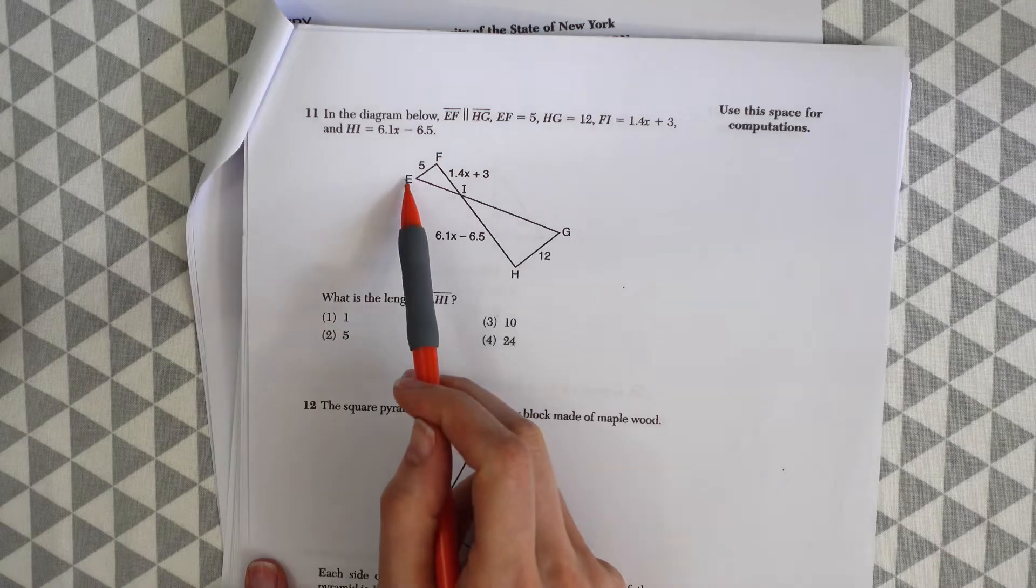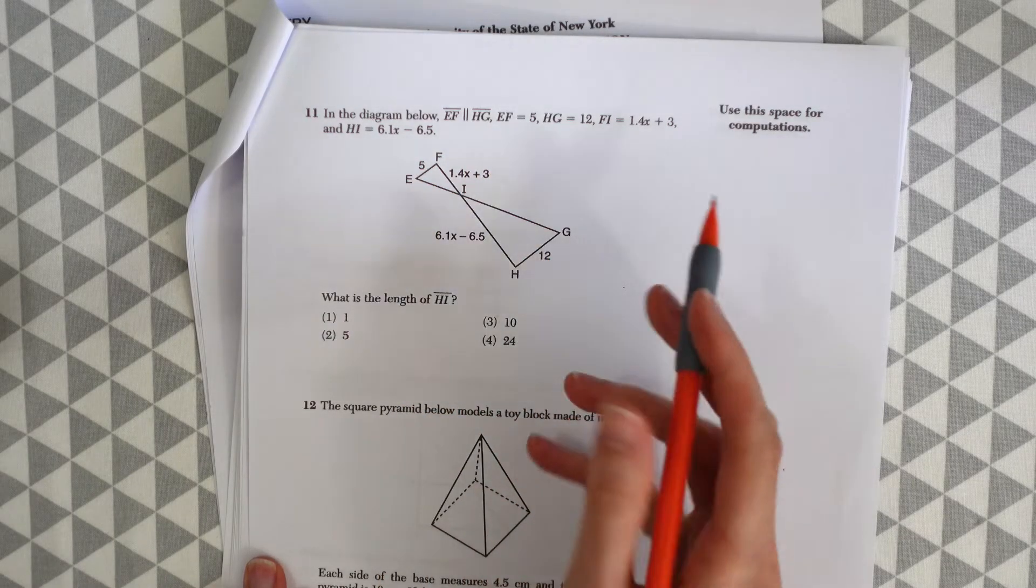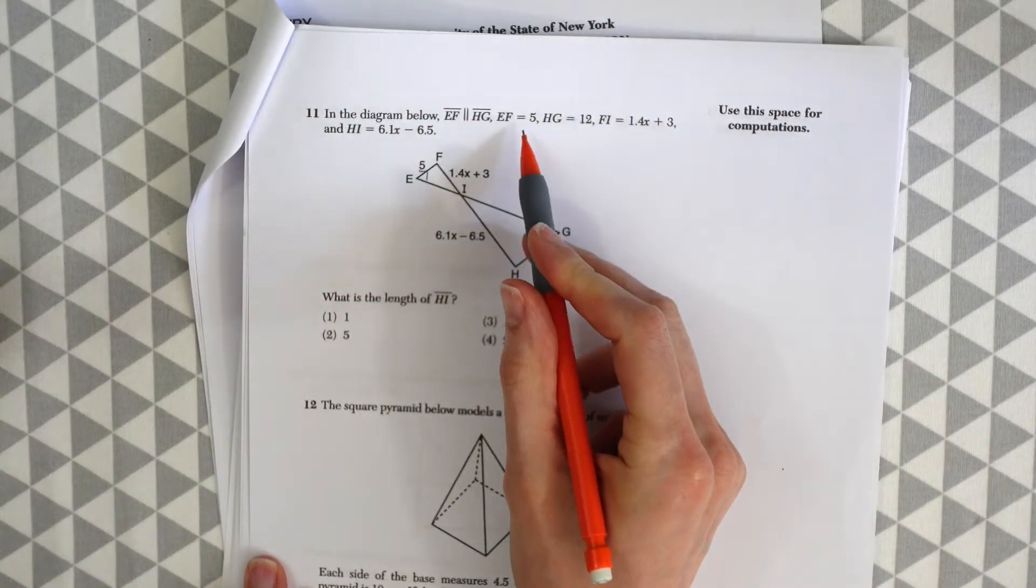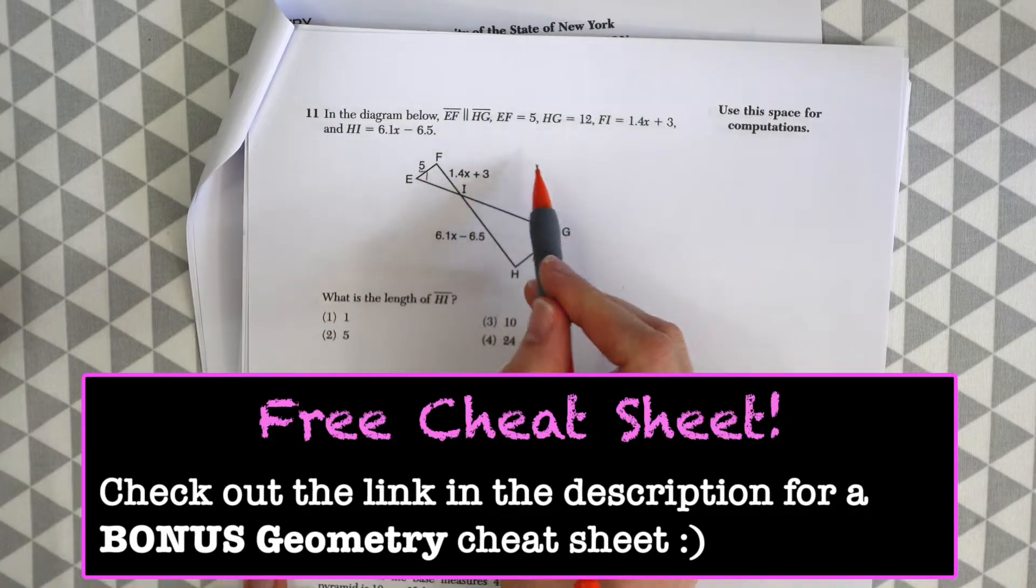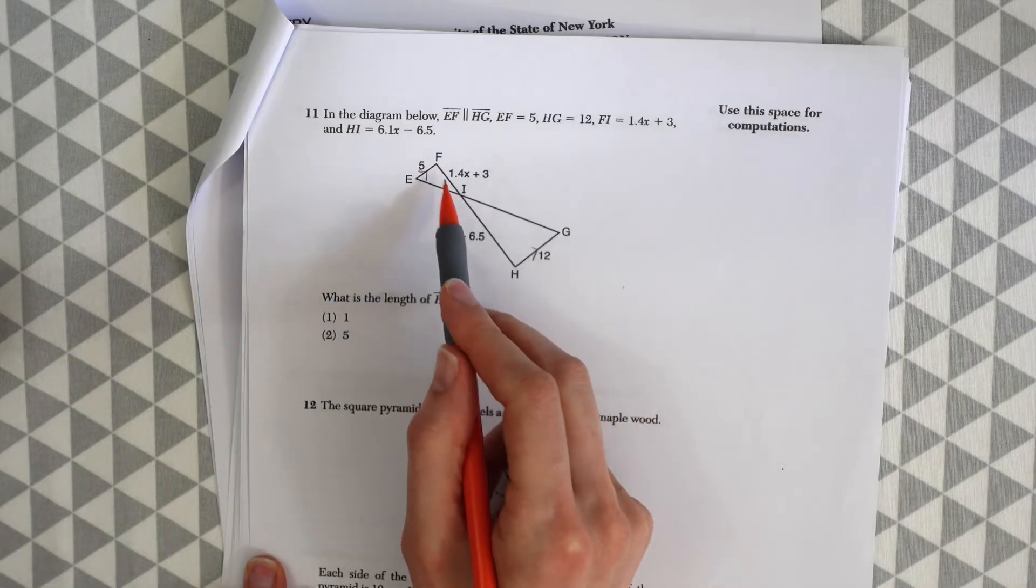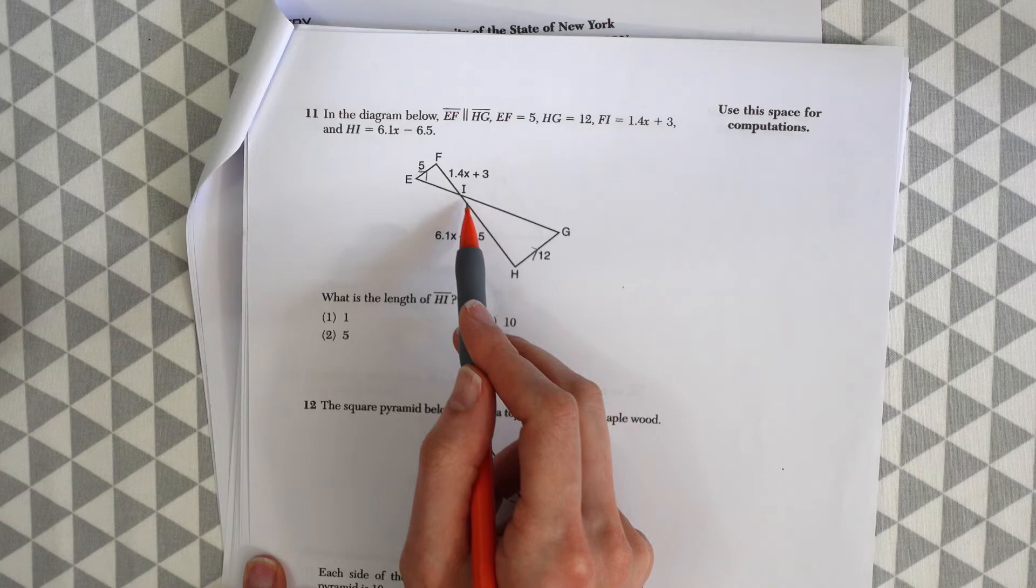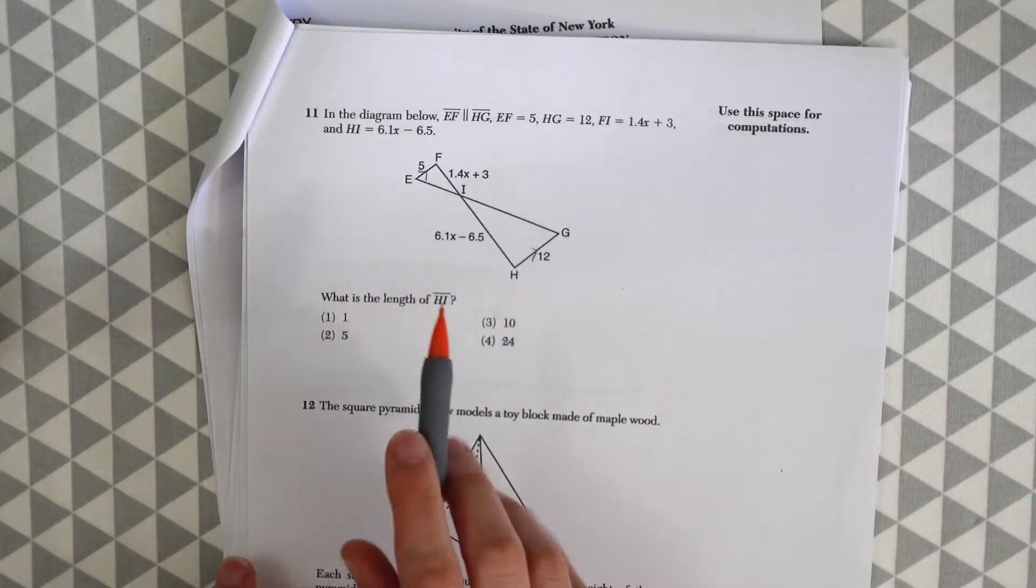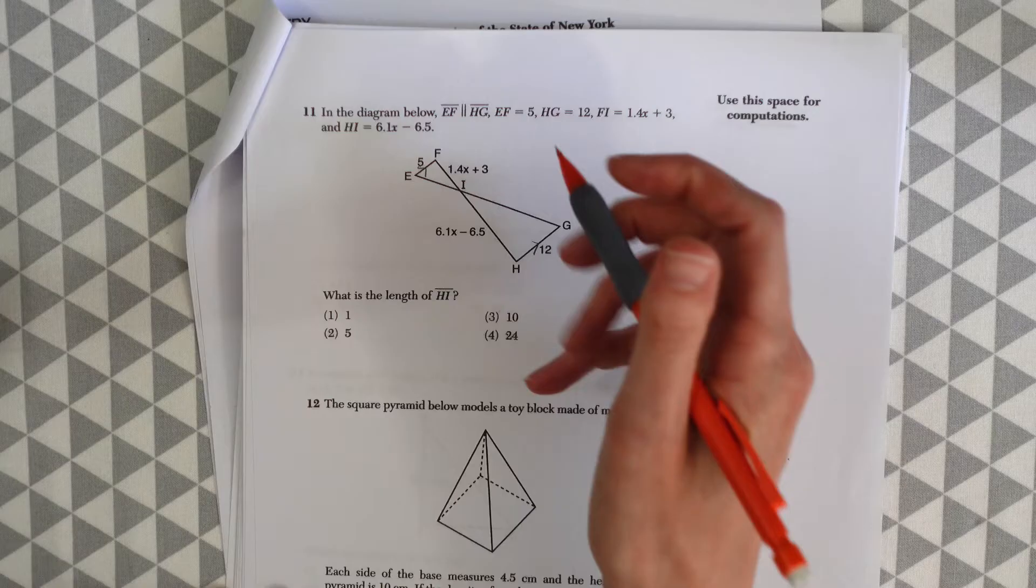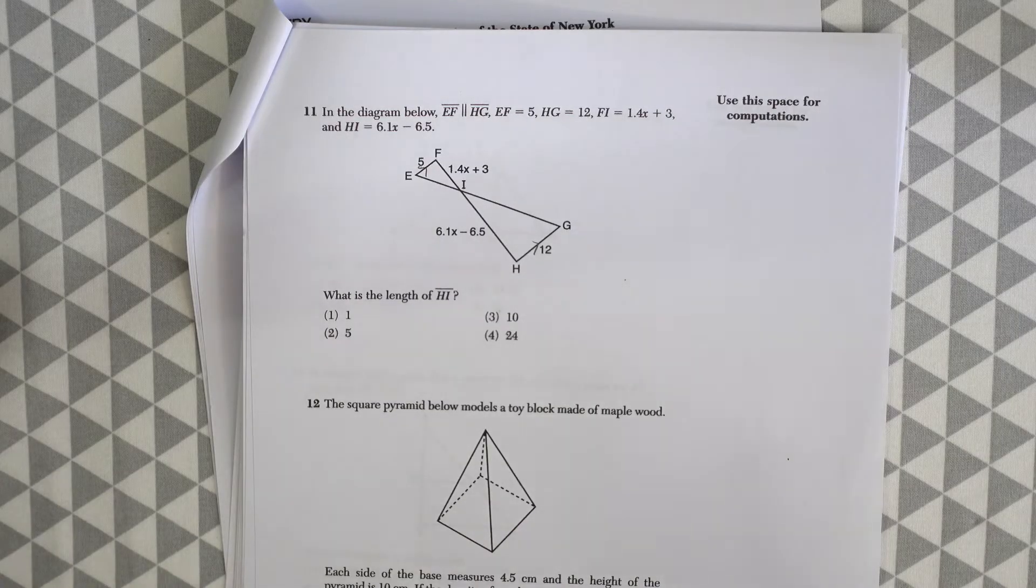Here is question 11. In the diagram below, EF is parallel to HG. So let's write our little parallel signs. EF is equal to 5, they fill this stuff in. HG is 12, FI is 1.4X plus 3, and HI is 6.1X minus 6.5. So all that's filled in for us. Now they want to know, what is the length of HI? So they want us to find X and figure out this equation here.